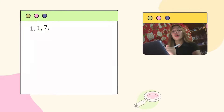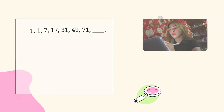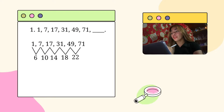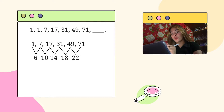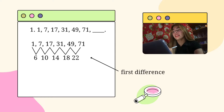In order to predict the next term, we first need to find the first difference. To find the first difference, we must subtract the first term from the second term, and then from there, subtract the previous term from the next term. So this will be the first difference.